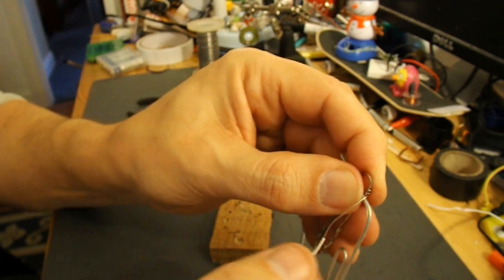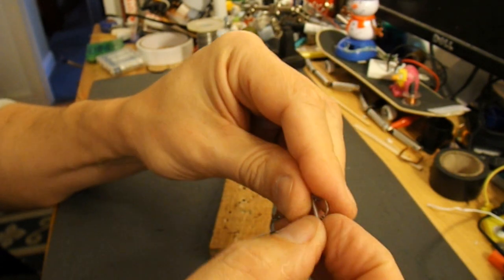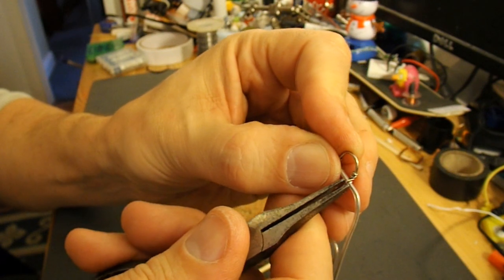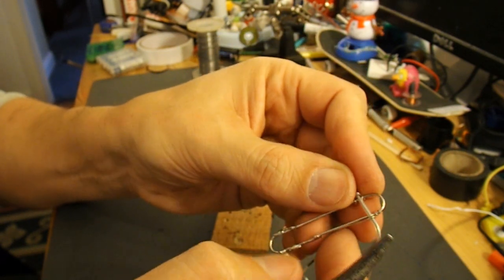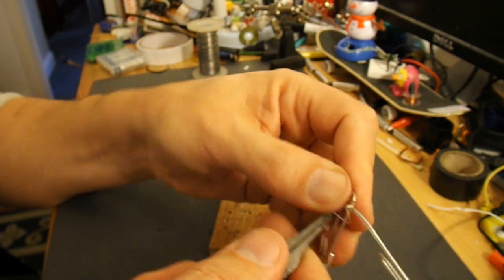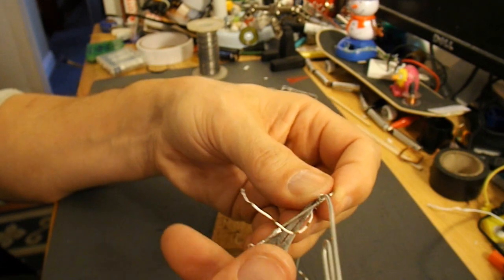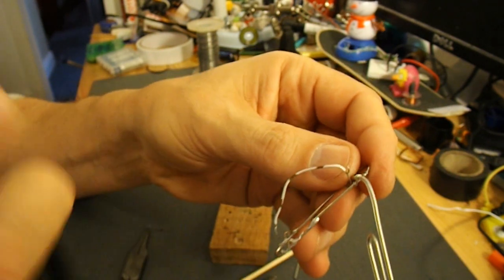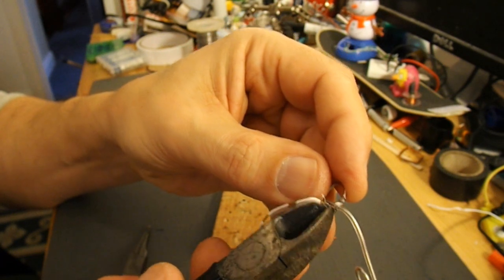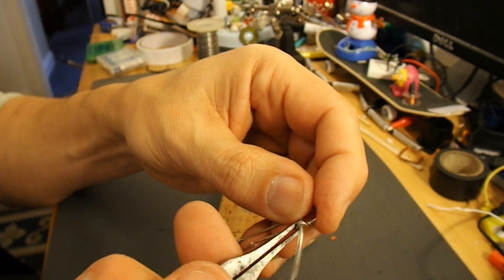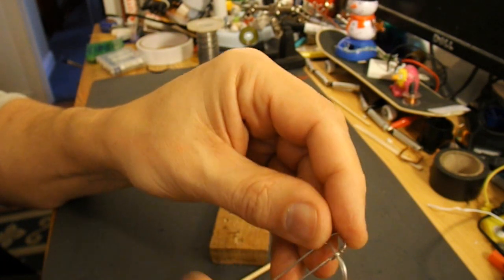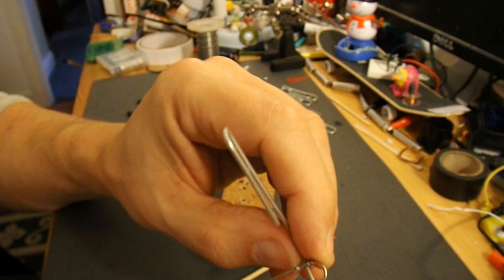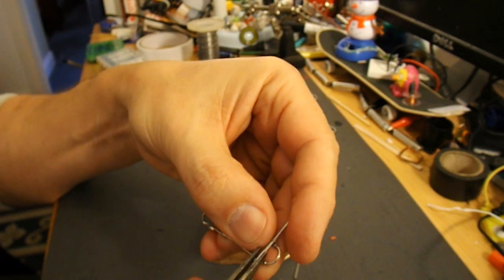Then we need to wrap it around the axle, or at least this isn't the axle but it's a similar size, a bit thicker diameter. And then wrap it around the paperclip a couple of times. So I should be able to solder that in place.